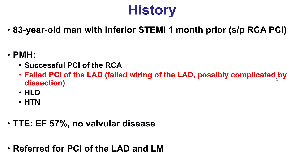The patient was an elderly gentleman who presented with inferior ST elevation myocardial infarction. The culprit lesion was successfully treated. However, treatment of the LAD lesion was unsuccessful due to inability to wire the lesion, which was likely complicated by dissection, and the patient was referred for staged PCI of the LAD as well as the left main.